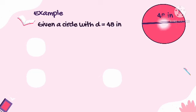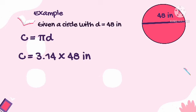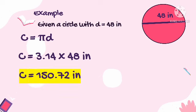Here we have a circle whose diameter is 48 inches. Since the diameter is given, the preferred formula to use is C = πD for direct substitution. So C = 3.14 multiplied by 48 inches, and the circumference is 150 and 72 hundredths inches.